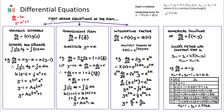Firstly, we're going to look at first order differential equations, and there are three different forms that we need to consider. First order means that the derivative in our differential equation is just a first derivative. A second order differential equation would have a second derivative, but we don't need that for this course. We just need to look at first order differential equations, so the largest derivative we will see is the first derivative.